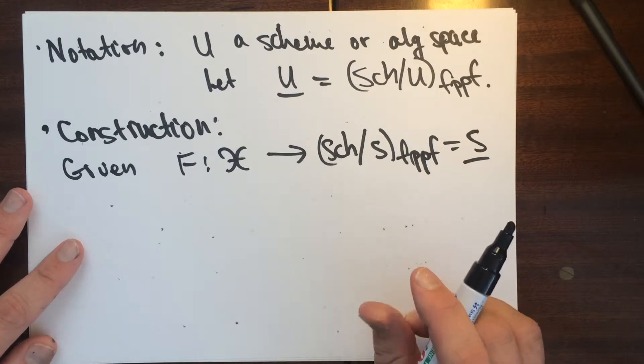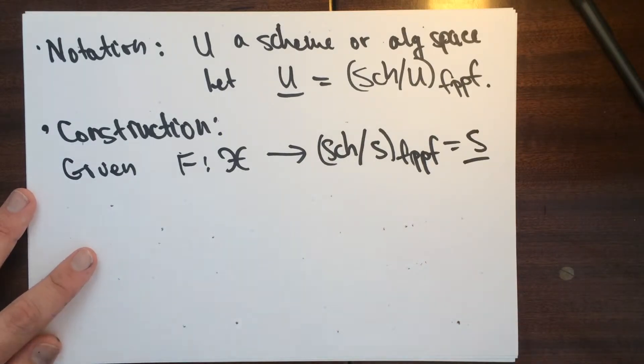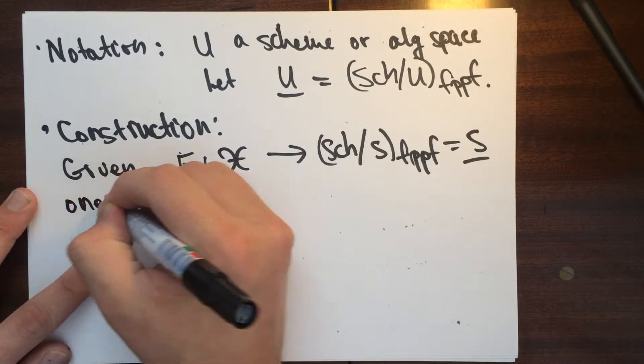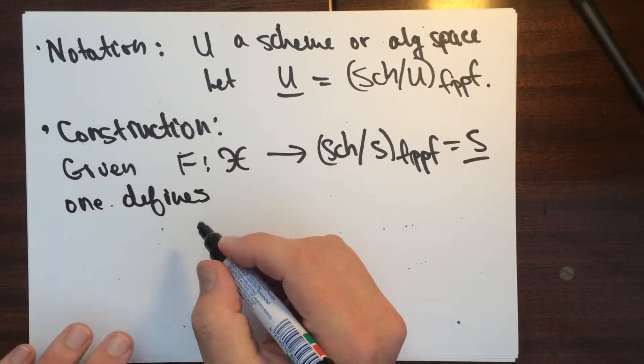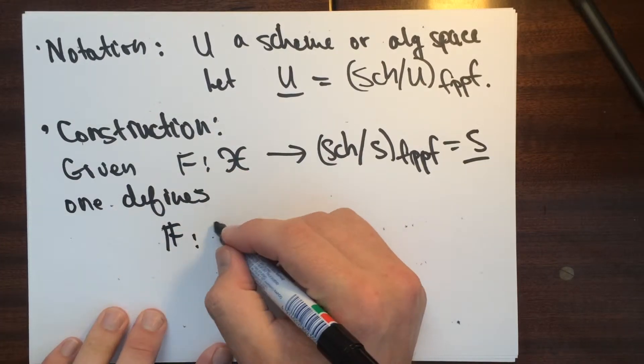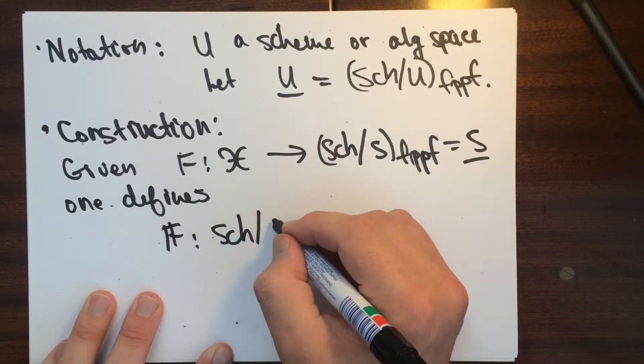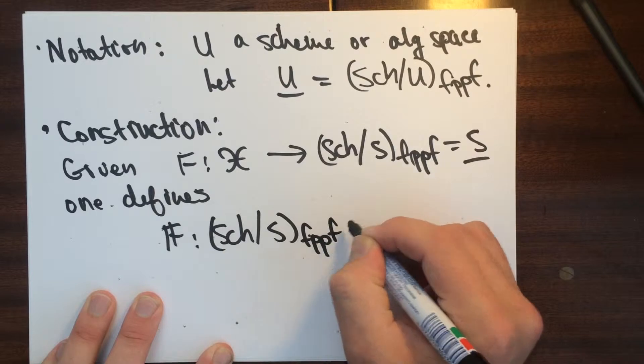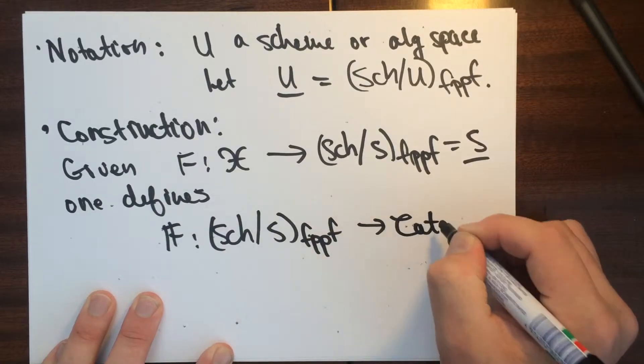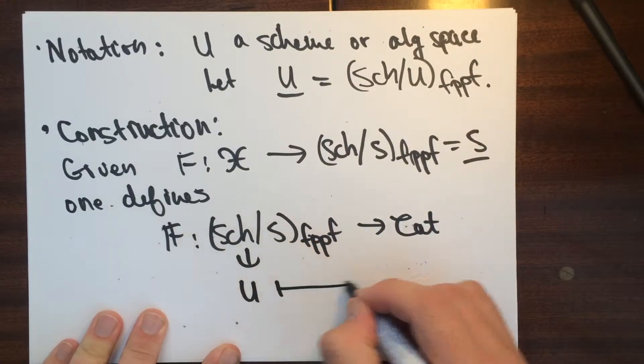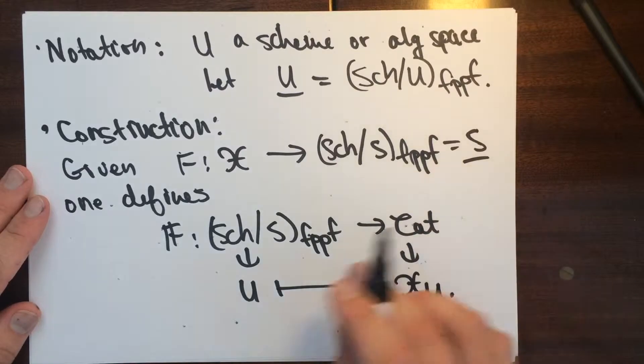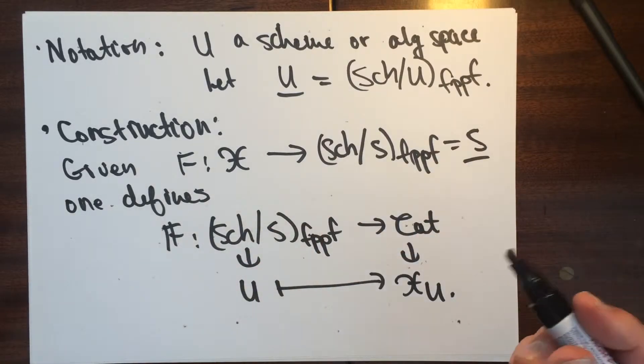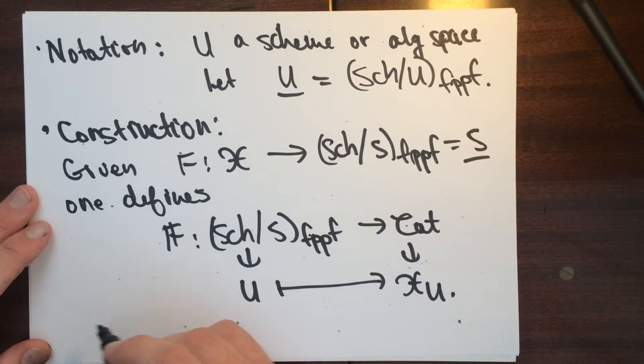And so we're going to view it as a functor. So we can consider defines this F from schemes over S in the fppf to the category of categories. And what we'll do is we'll take U here and then we'll map it to X sub U. Okay, so this is a, this is a construction.